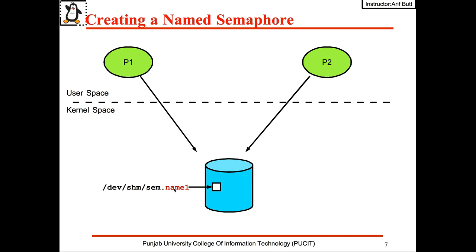One process or thread can create this semaphore while other processes or threads knowing the name can simply open it and later use the sem_wait and sem_post calls as per the program logic. Before going to the Linux terminal, let us quickly see how these calls actually work.